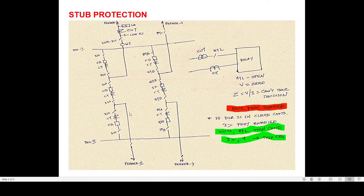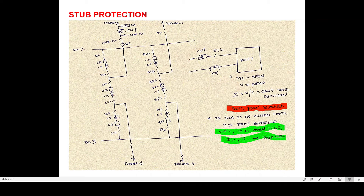Now this is the one-and-a-half breaker scheme. A breaker with isolators on both sides and a CT is called one bay — this is the main bay, this is the tie bay, and this is the second main bay. Two feeders, one from each side, are connected. We are focusing only on one feeder. This is the line isolator followed by the R switch, CVT, and LA. This is CVT, then the 89L isolator, and the CVT input is connected to the relay. Likewise, CT input is also connected to the relay. When your 89L or line isolator is open, the CVT voltage is zero in this relay. So Z = V/I cannot be calculated and the relay cannot take a decision.